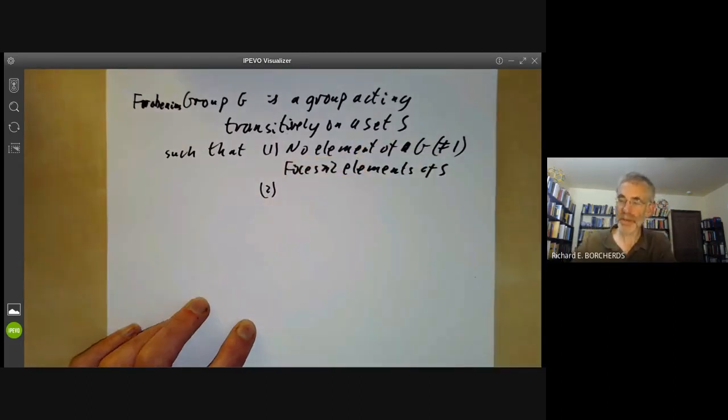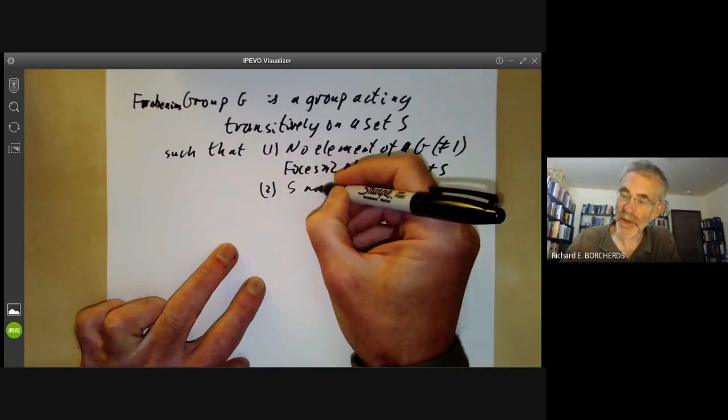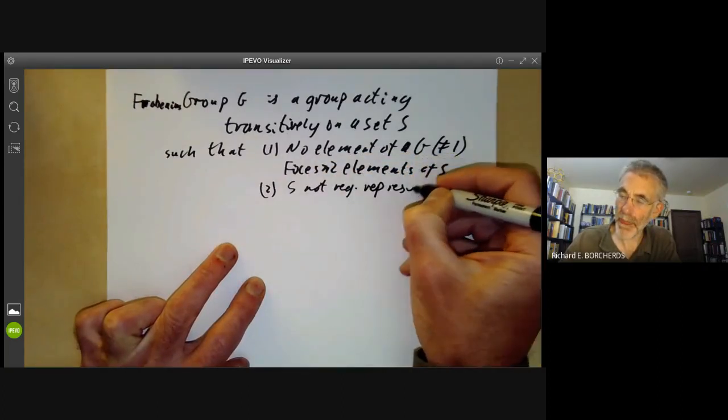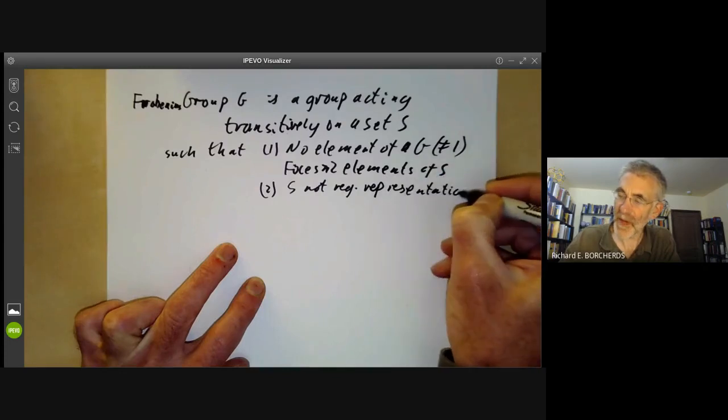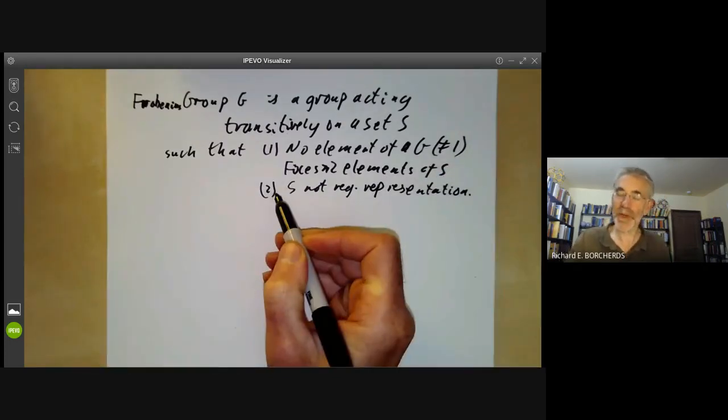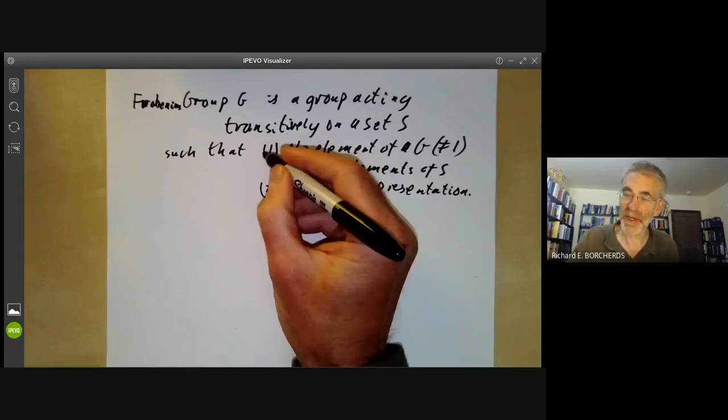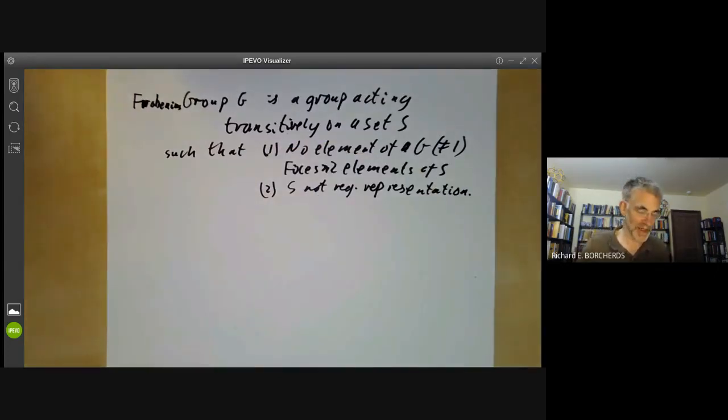Secondly, S is not the regular representation. So the second just eliminates the stupid case where G acts by left translations on itself, which obviously satisfies condition one, but isn't terribly exciting.